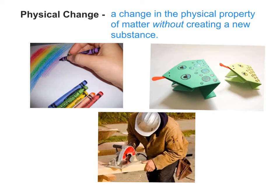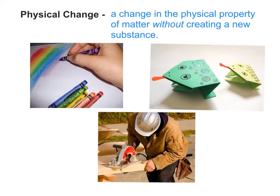We're going to start with physical change. The definition of physical change is a change in the physical property — observable or measurable, that you had the quiz on — of matter without creating a new substance. So when we color on paper, are we changing the paper or is it still paper? It's still paper. We're just making it a new color.